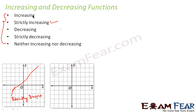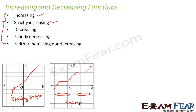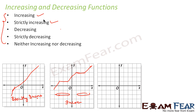An increasing function is a function which increases in particular areas, but in some areas it may be constant. For example, looking at this function — it is increasing from here to here, then constant from here to here, and also constant in another segment. Sometimes increasing and sometimes constant — that kind of function is called an increasing function.